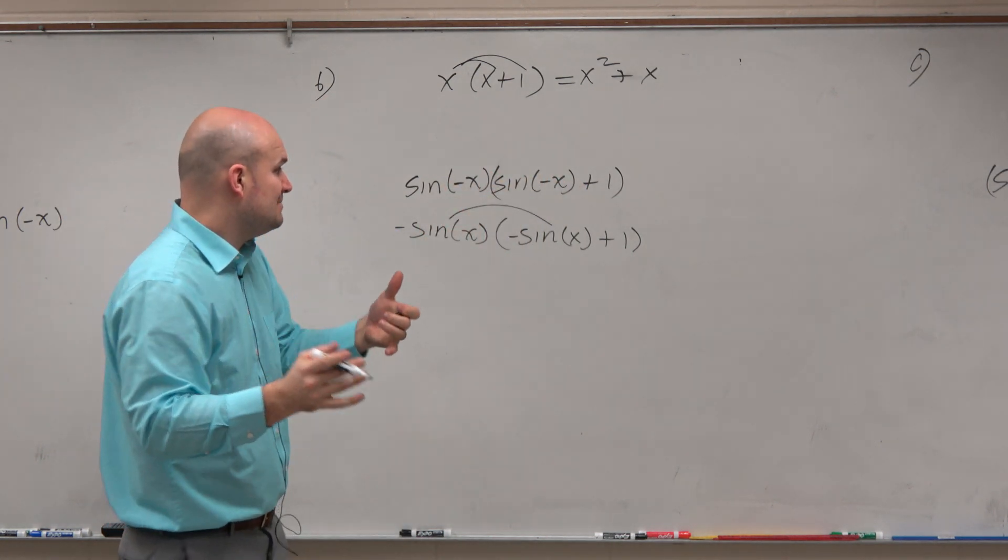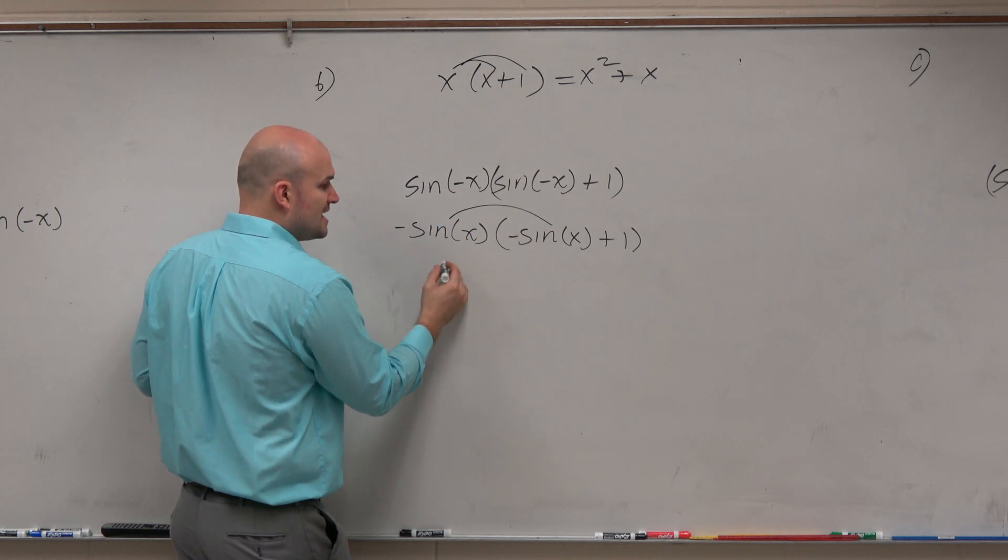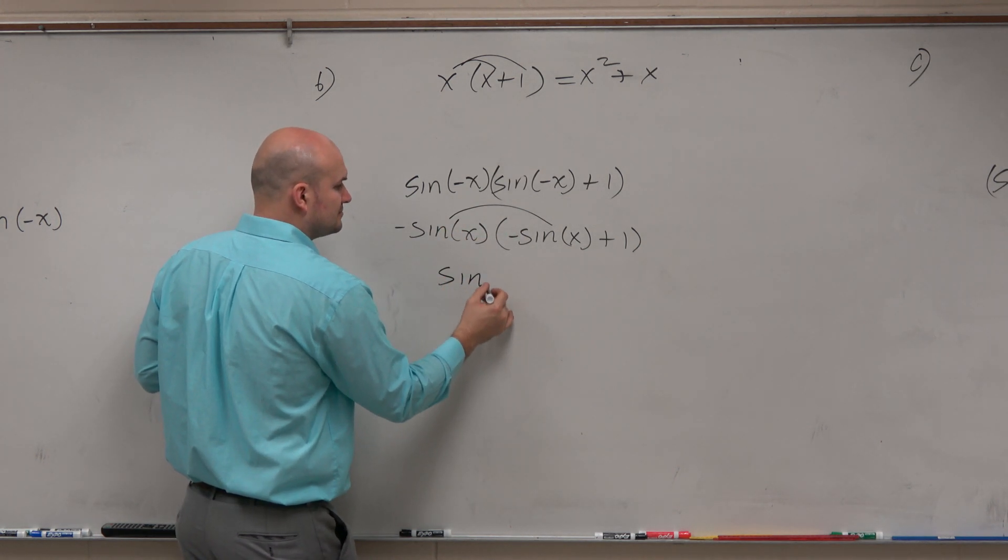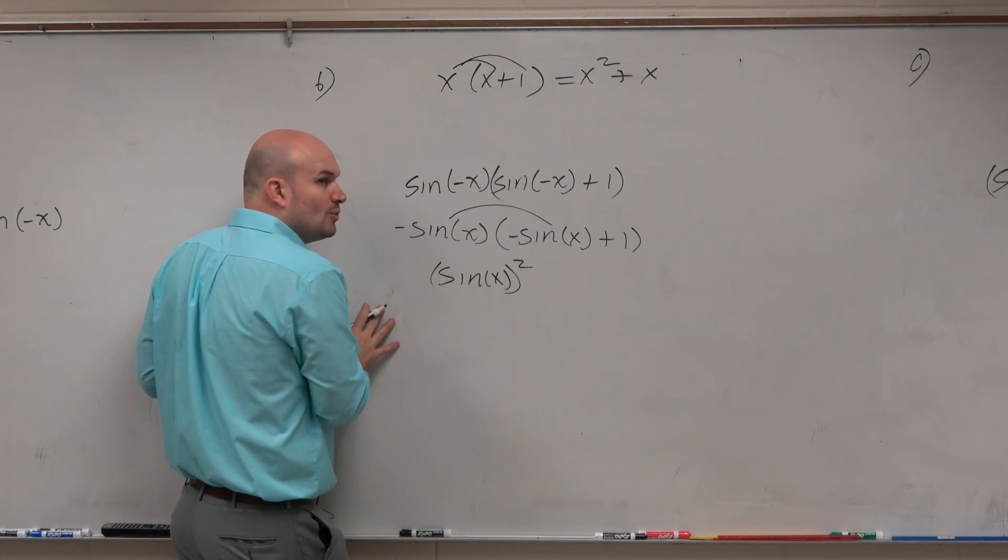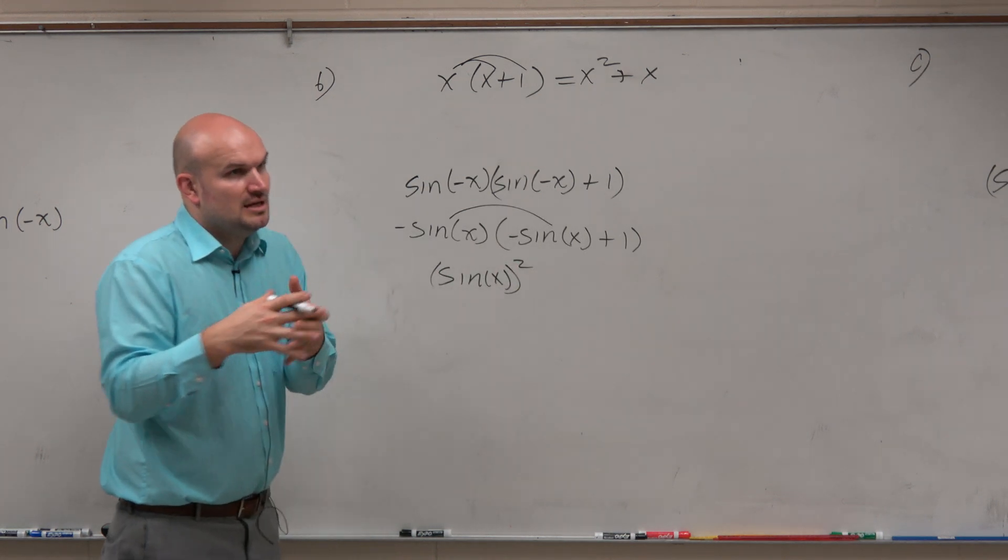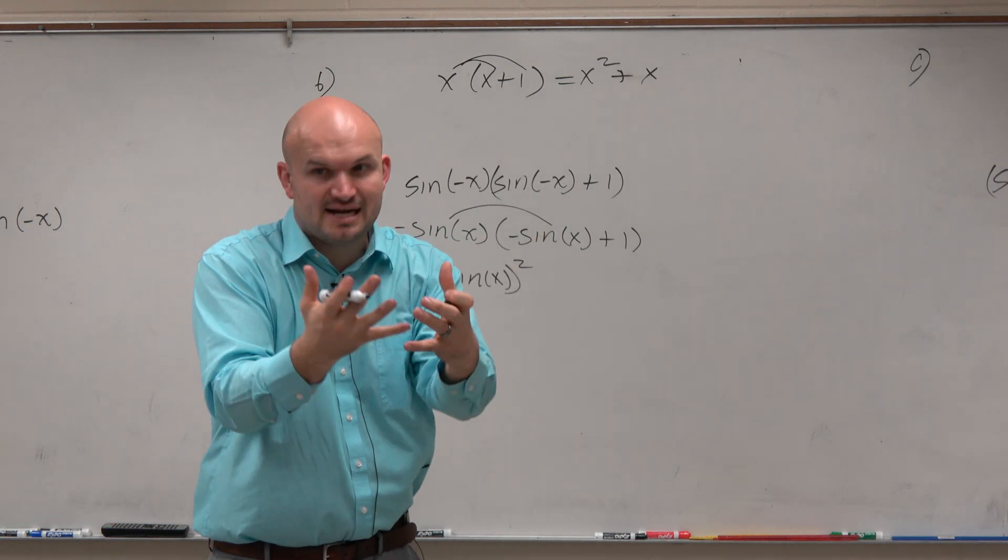So you're combining both of them. Negative times negative is a positive. But notice, I'm going to square the sine of x because it's sine of x times sine of x.